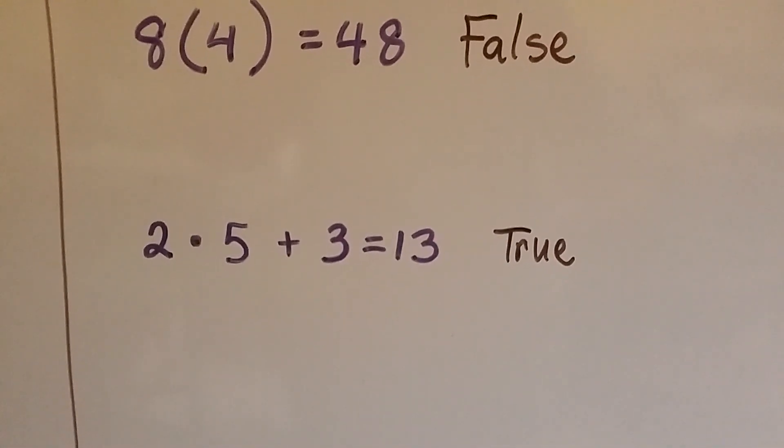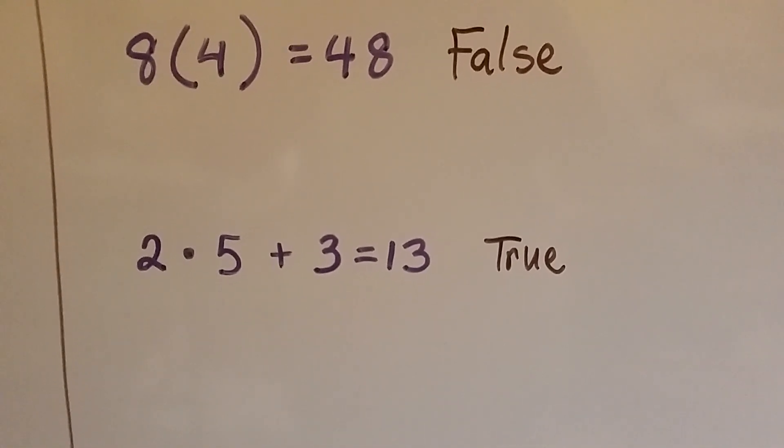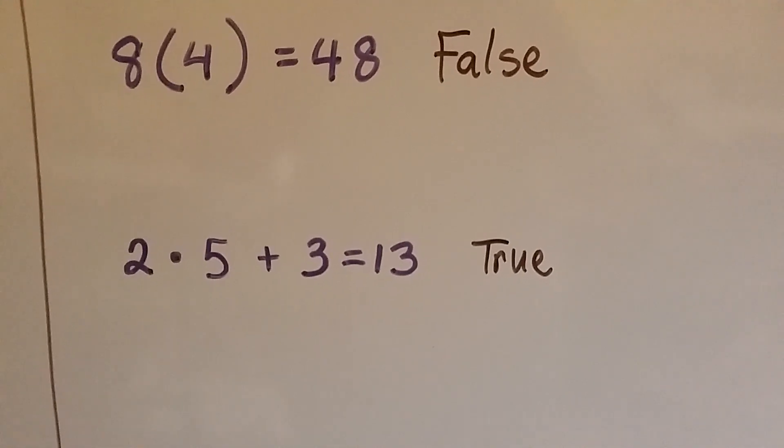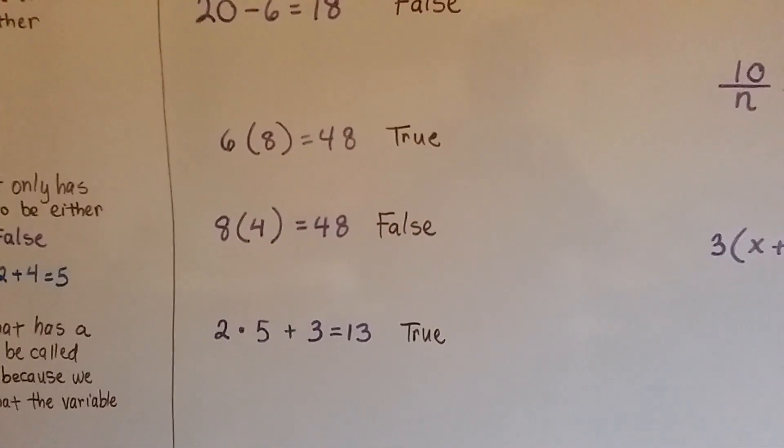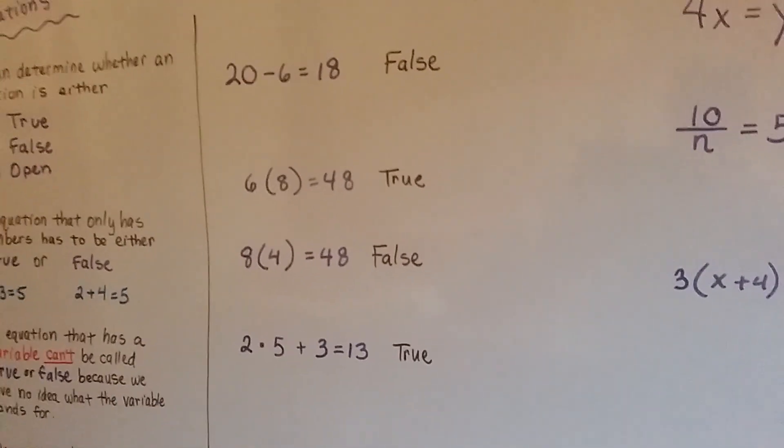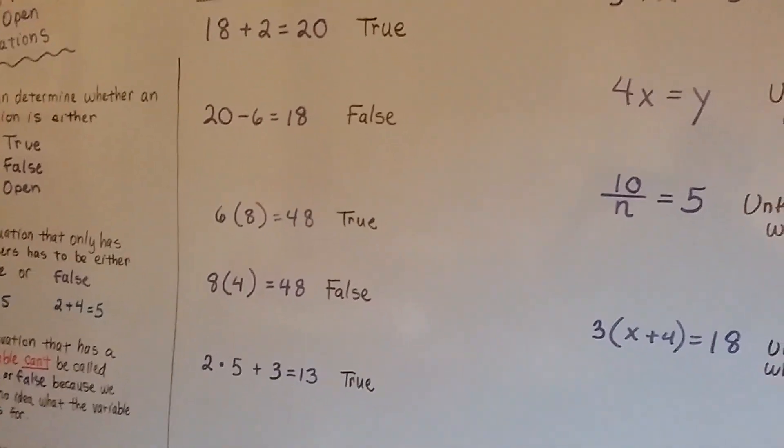2 times 5 plus 3 equals 13. Well, 2 times 5 is 10 plus 3 is 13, that's true. So when they have numbers in them, we can tell whether they're true or false. We can just see they're true or false. We can do the math.